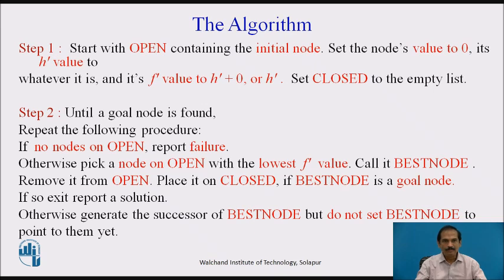In step 2, until the goal node is found, repeat the following procedure. If no nodes are on open, report a failure because there are no nodes and hence we cannot do any search. Otherwise, pick the node on open with the lowest F' value and call it the best node. Remove it from open and place it onto closed. If the best node is a goal node, exit and report that a solution has been achieved.